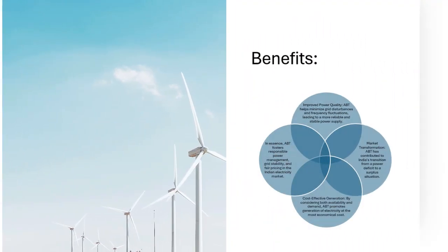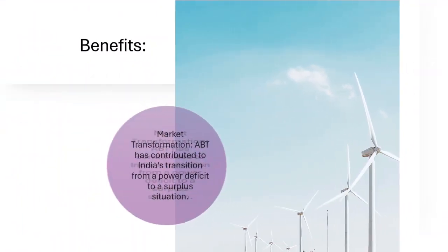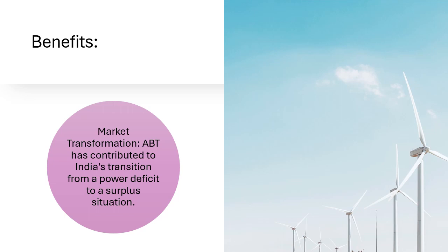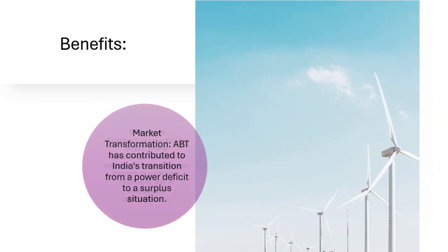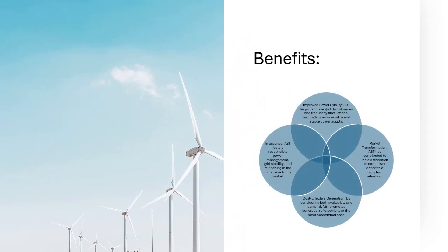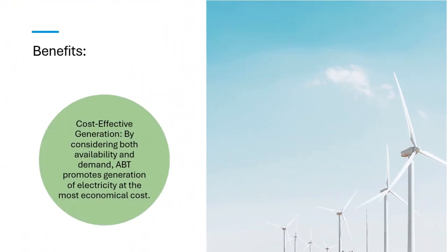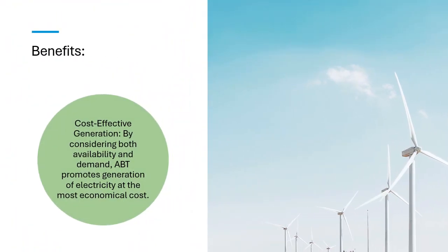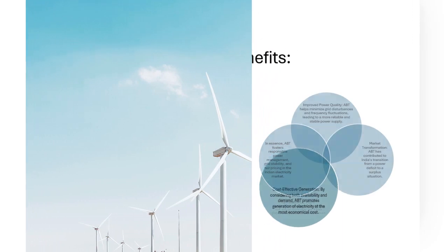Market Transformation: ABT has contributed to India's transition from a power deficit to a surplus situation. Cost-effective Generation: By considering both availability and demand, ABT promotes generation of electricity at the most economical cost.